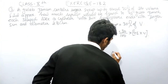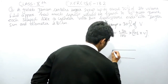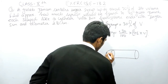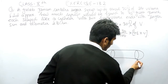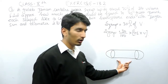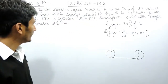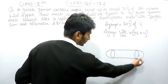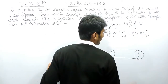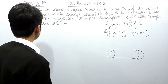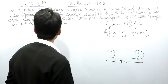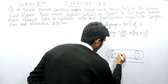If I draw the figure, it looks like this: the center is a cylinder attached to two hemispheres at each end. The total length is given as 5 centimeters and the diameter is 2.8 centimeters. To find the volume of one gulab jamun, I need to find the combined volume of the cylinder and the two hemispheres.